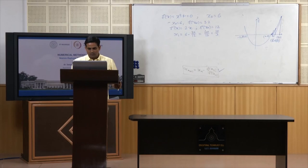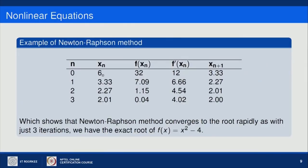Numerically, solving this problem: x₀ = 6, x₁ = 3.33, x₂ = 2.27, and x₃ = 2.01. This shows that Newton-Raphson method converges to the root rapidly — with just 3 iterations we have a value very close to the exact root of f(x) = x² − 4.